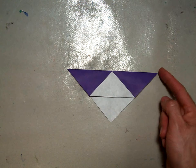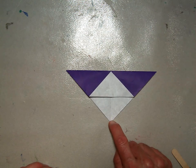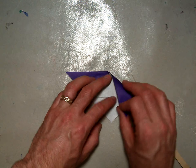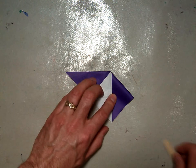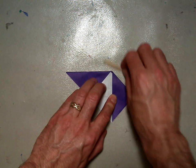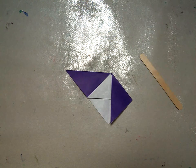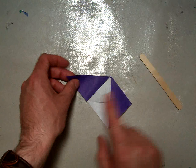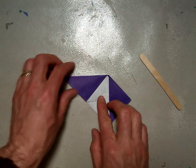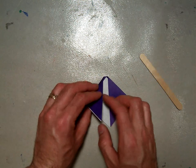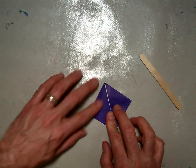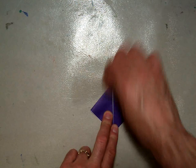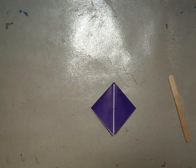And then you're going to take this corner here and fold it down to this corner. Crease it with your bone folder. Fold the other edge down, this corner down to this corner. Use your bone folder.